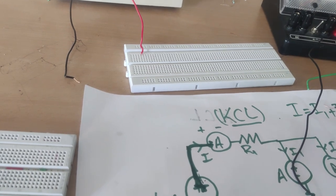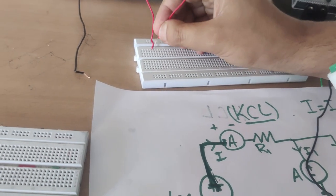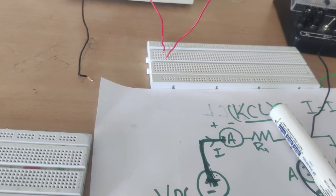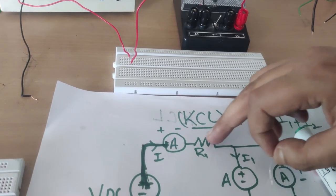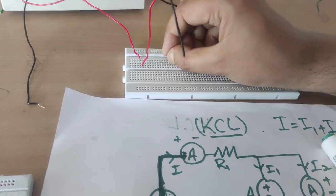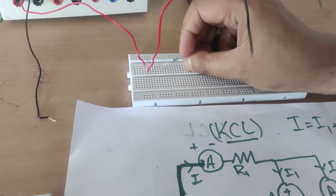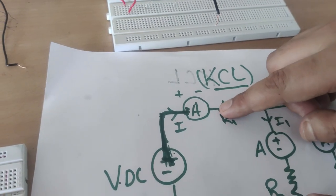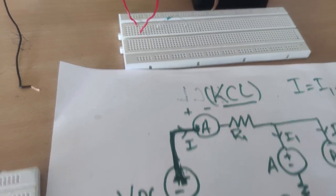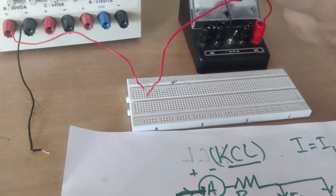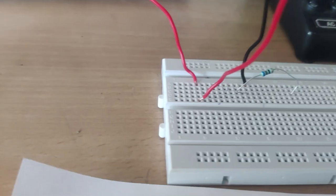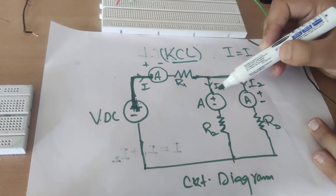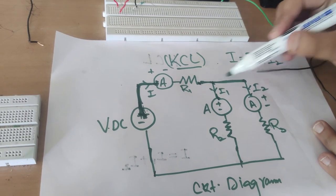I will connect the positive line to the ammeter. You can verify with the multimeter whether this line is shorted. Now I will connect resistor R1 here. The negative of the ammeter is connected to one end of R1. The other resistors R2 and R3 are connected to the ammeter positives, and this line is the same node, so all three are shorted.